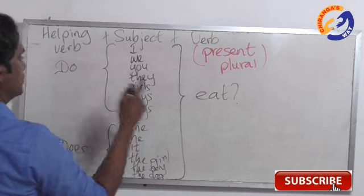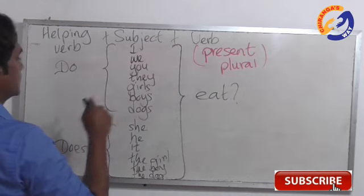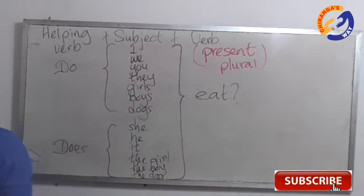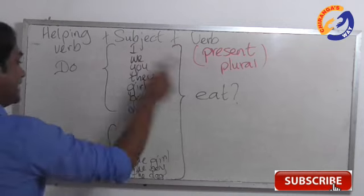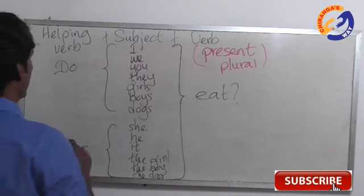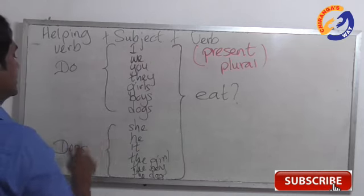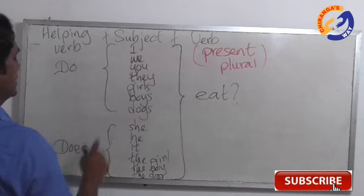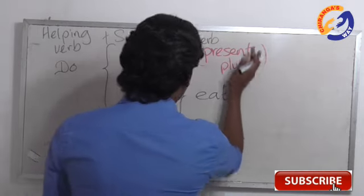Do I eat? Do we eat? Do you eat? Do they eat? Do girls eat? Do boys eat? Do dogs eat? Here also the same. Does she eat? No, not eats. Does he eat? Does it eat? Does the girl eat? Does the boy eat? Does the dog eat? Let's take another example.